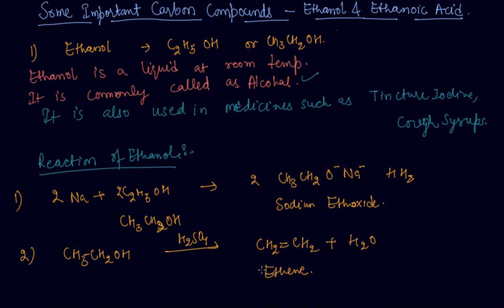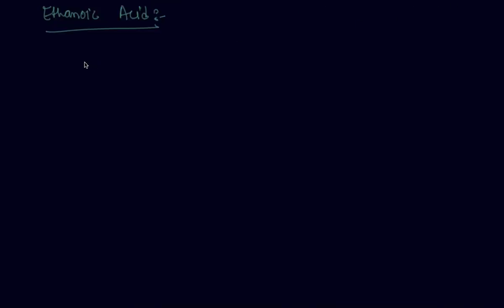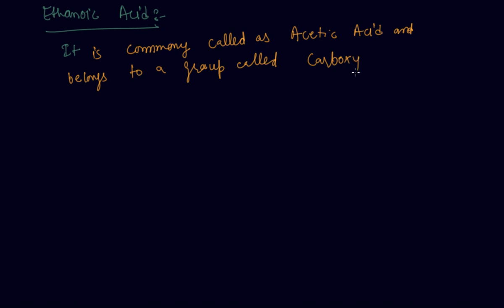So now let us discuss about some properties of ethanoic acid. Ethanoic acid is commonly called as acetic acid and belongs to a group called carboxylic acids.